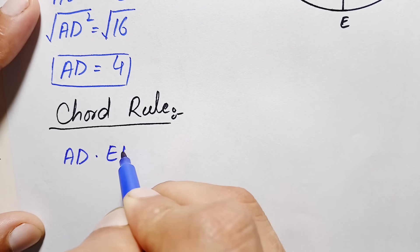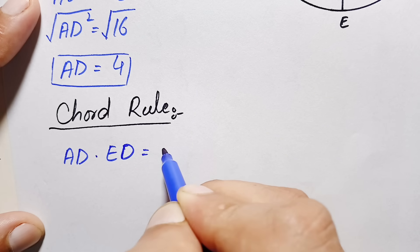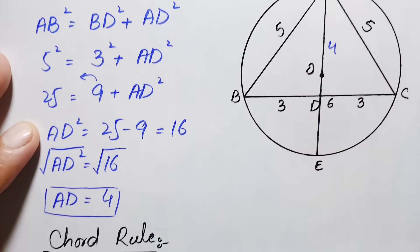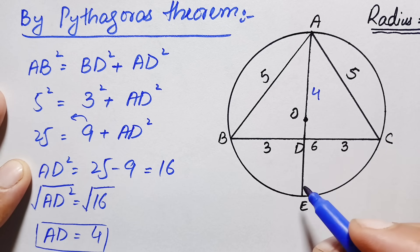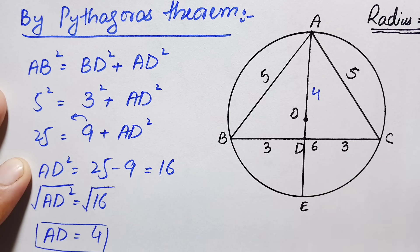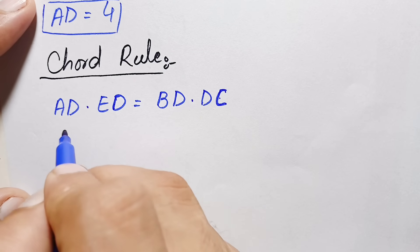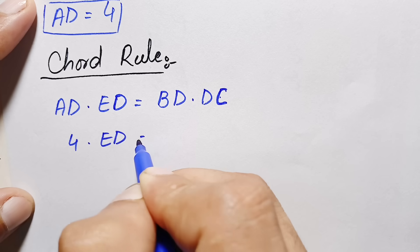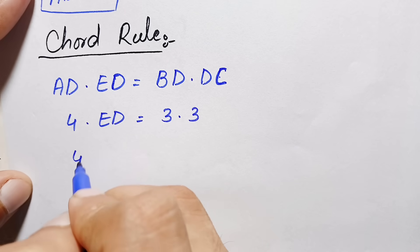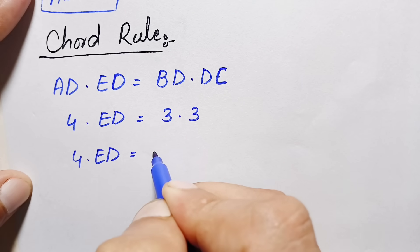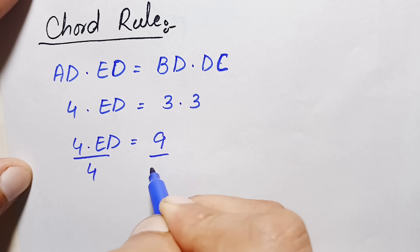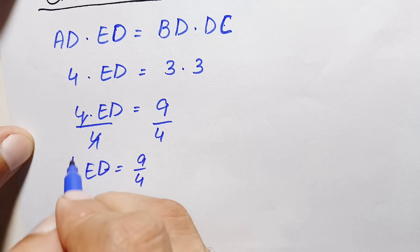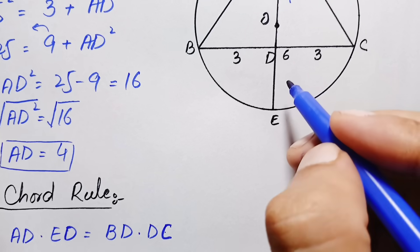The chord rule states that if a circle has two chords, the product of the two segments of one chord equals the product of the two segments of the other chord. In this circle, we have two chords: chord AE and chord BC. So AD × DE = BD × DC. Substituting values: 4 × DE = 3 × 3 = 9, so DE = 9/4 units.